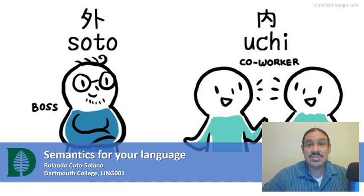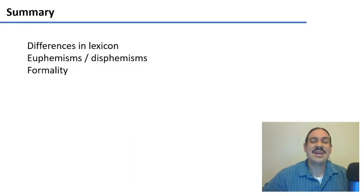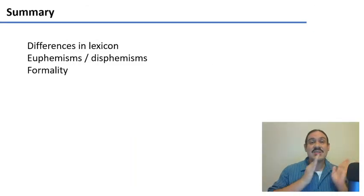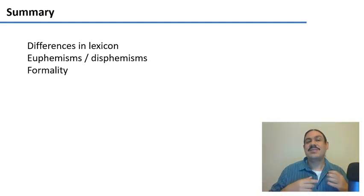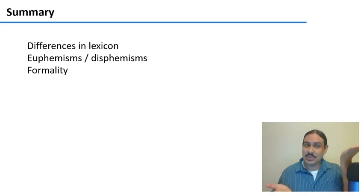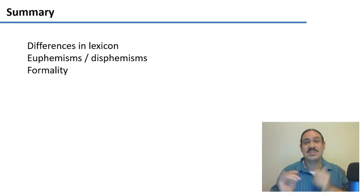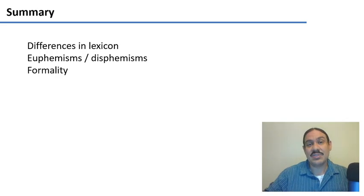In this video, we'll study some additional concepts that you'll need to make the semantics for your language. I'll focus on three concepts: the differences in lexicon between languages, the difference in words, the need for some words that are more polite and more impolite — these are euphemisms and dysphemisms — and systems of formality across languages.